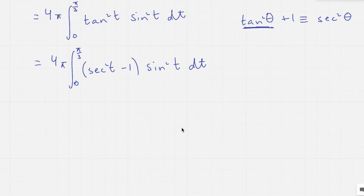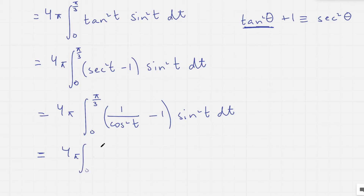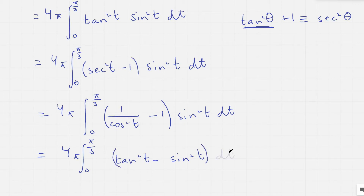Sec squared t can be written as 1 over cos squared t. Expanding the bracket: we get 1 over cos squared t minus 1, multiplied by sin squared t with respect to t. When we expand, we get sin squared t over cos squared t, which is tan squared t, minus sin squared t — because sin squared t times 1 is sin squared t. This is integrated with respect to t.